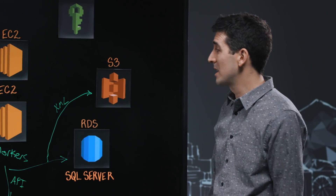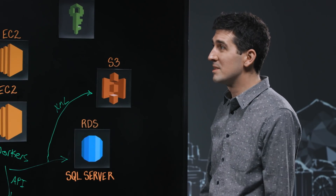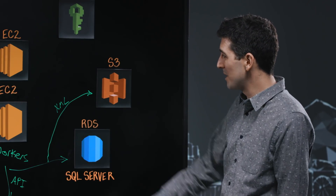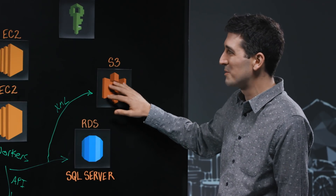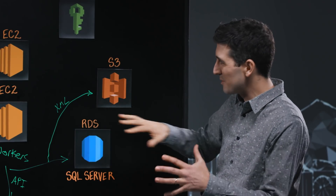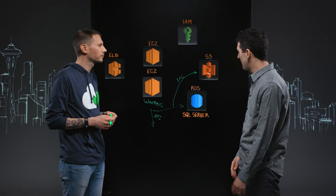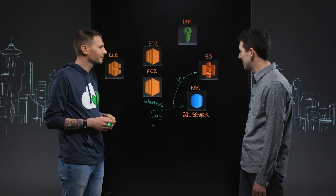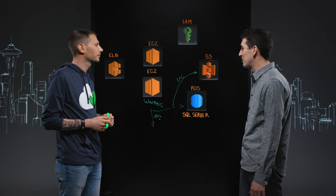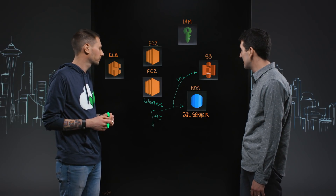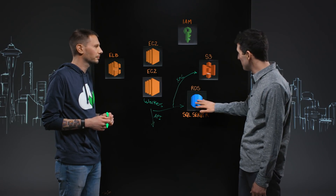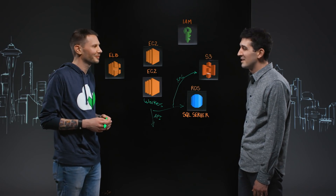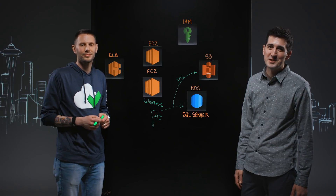I like how you're using IAM with cross-account roles and policies to provide fine-grained secure access to customer accounts. It's nice how you're offloading database load to S3 with pre-generated reports. I love how you're using enterprise Microsoft workloads on AWS — SQL Server at scale. It's a nice architecture. Thanks for sharing it with us, and thanks for watching This is My Architecture.